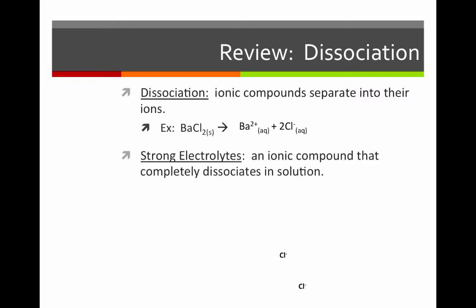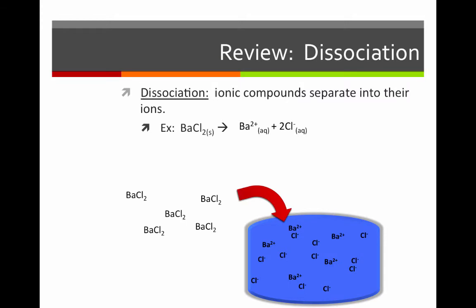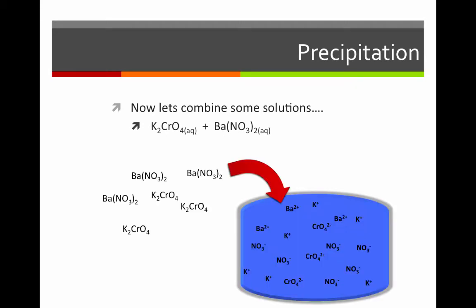...and two aqueous chloride ions, since the compound was made up of one barium and two chlorides. Recall that strong electrolytes are ionic compounds that completely dissociate in solution. Visually, if we put five barium chloride formula units in water, we should get five Ba2+ ions and ten Cl- ions, since there's a two-to-one ratio between chloride and barium. Now let's see what happens if we combine two aqueous solutions.